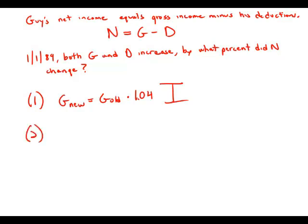Now we ignore that piece of information and focus on the other. We find out that the deductions, the new deductions, represent a 15% increase over the old deductions. So the multiplier for that is 1.15. This statement tells us how much the deductions change but tells us nothing about how much the gross income changes. So this one also by itself is insufficient.